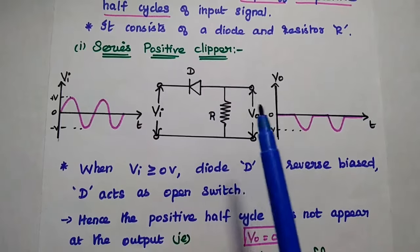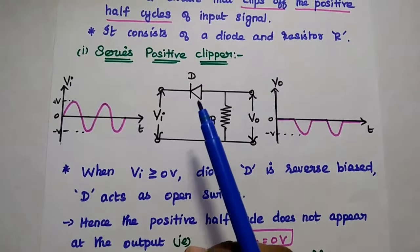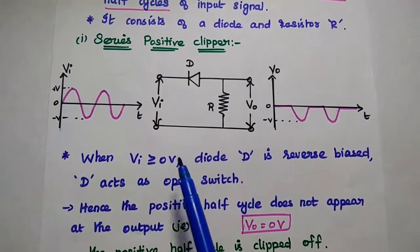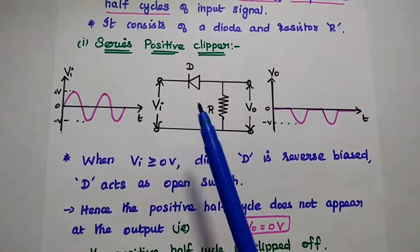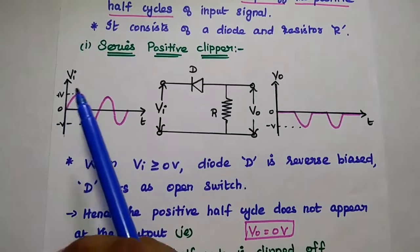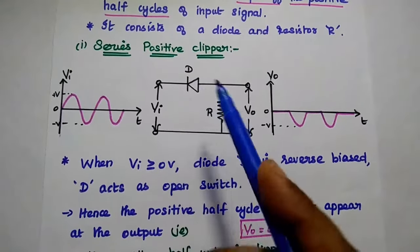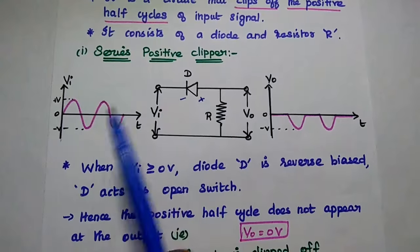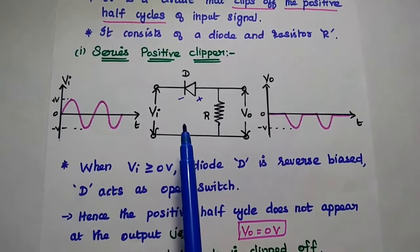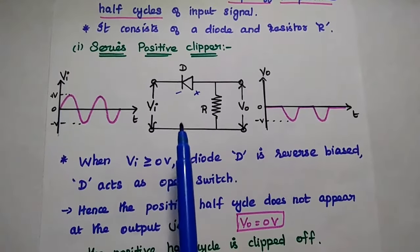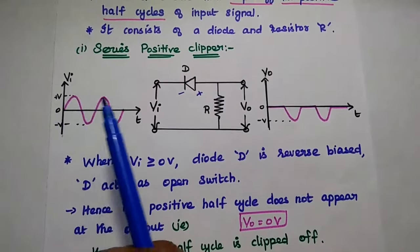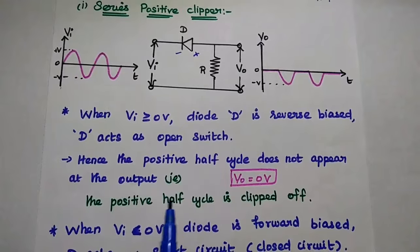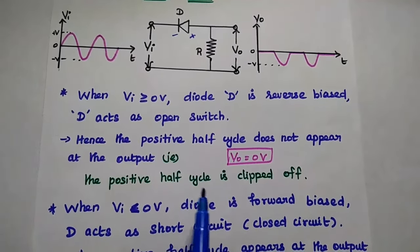In the series positive clipper, the negative part of the diode is connected with the input side. Whenever the input voltage is greater than zero — that means the positive half cycle is given as input — the diode is reverse biased. During the positive cycle, positive is connected with negative, meaning it is reverse biased. If the diode is reverse biased, it acts as an open switch, so there is no output. During the positive half cycle, there is no output, meaning the positive half cycle is clipped off.